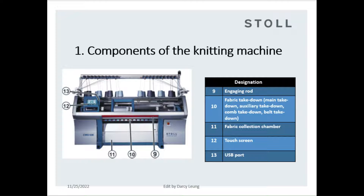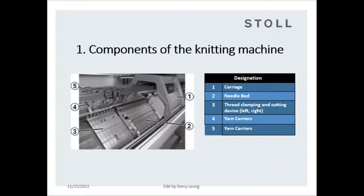10, fabric take-down components include main take-down, auxiliary take-down, cone take-down, and belt take-down. 11, fabric collection chamber. 12, touch screen is the machine operation platform. 13, USB port for loading in or out machine programs. 1, carriage carries the cam box and yarn feeders. 12, needle bed. 13, thread clamping and cutting device.